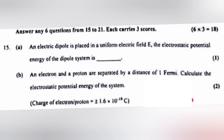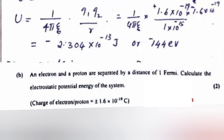B: An electron and a proton are separated by a distance of 1 Fermi. Calculate the electrostatic potential energy of the system. Answer: U is equal to minus 2.304 into 10 raised to minus 3 Joule.